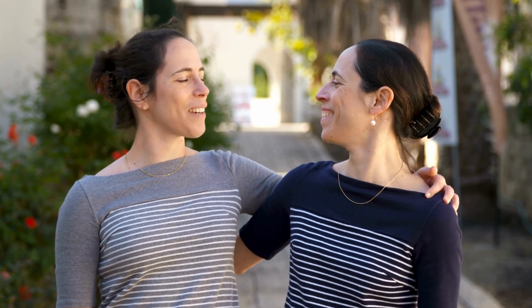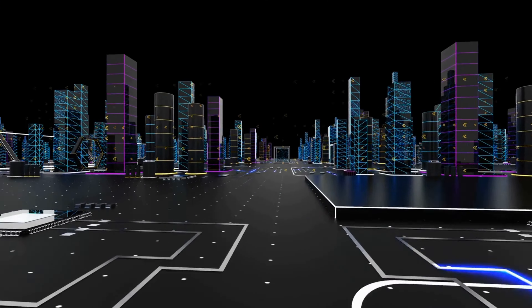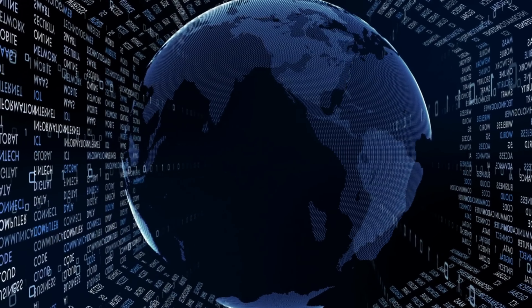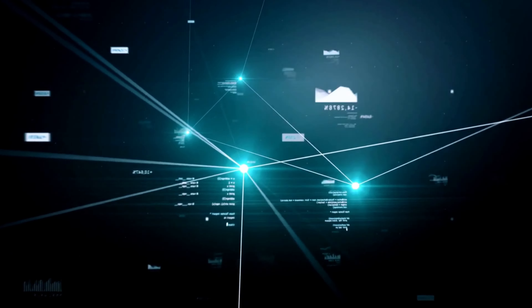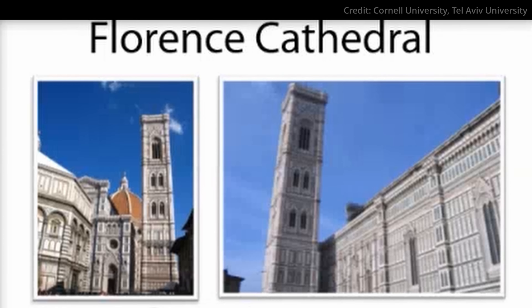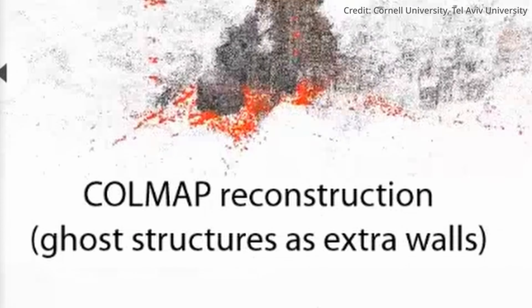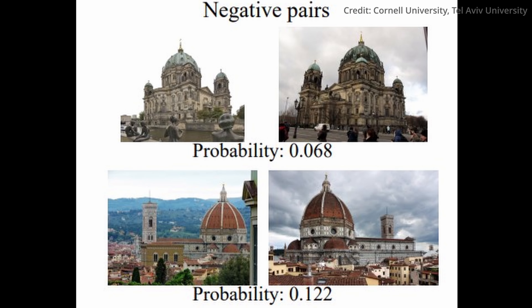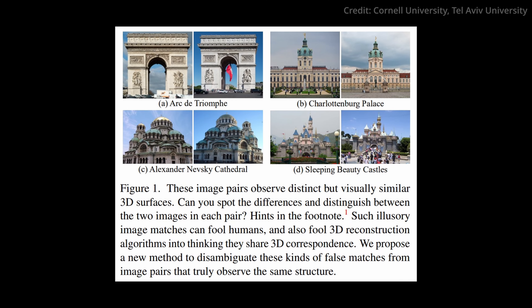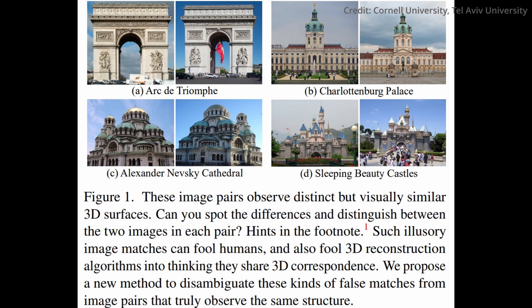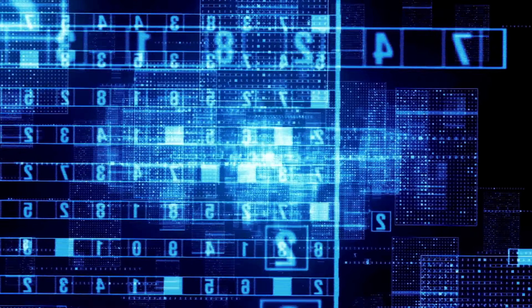Imagine trying to distinguish between two nearly identical twins, right down to the freckles and hairstyles. That's precisely the kind of challenge computers often face when interpreting images of remarkably similar 3D surfaces. Failures in this task can result in inaccurate 3D models, significantly impacting applications from virtual reality to autonomous vehicles. The Cornell and Tel Aviv research team tackled this problem by creating a unique dataset aptly named Doppelgangers, featuring pairs of images that are either duplicates or strikingly similar yet distinct. The dataset also leverages existing image annotations from the Wikimedia Commons database, allowing for the automatic generation of a vast set of labeled image pairs.